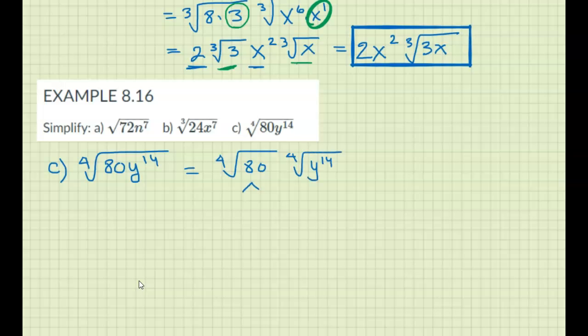I'm going to do a factor tree on this one. So 2 and 40, 2 and 20, 2 and 10, 2 and 5. Okay. Alright.